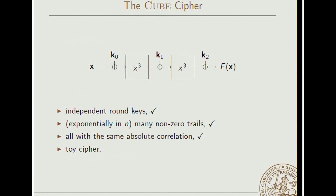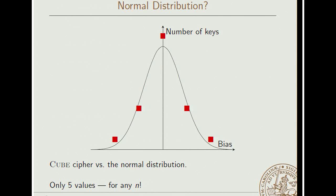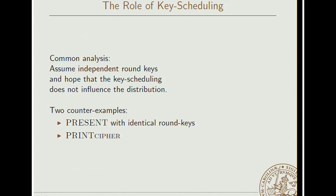However, let's look at the cube cipher, where each round function is a cubing in a finite field. And there are only two rounds. So this is clearly a toy cipher. There is a lot of structure here. It's subject to various attacks. But it has independent round keys, it has a huge number of non-zero trails, and they all have the same absolute correlation. So while this is a toy cipher, it should behave according to the theorem. But it doesn't. While the theorem suggests this nice bell curve, what we get is this very discrete distribution of just five distinct values for the correlation, for all values of n. So no matter how much we increase the block size, the distribution will look like this, which is not a normal distribution. So there is something wrong in that theorem, for sure.